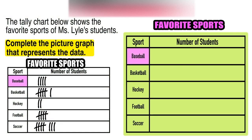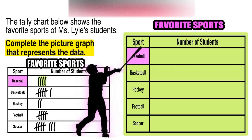For our picture graph, we are going to use stars as our symbol, and each star represents one. So let's start out with baseball. Out of Ms. Lyle's students, four of them chose baseball as their favorite sport. So on our picture graph, we need four stars.